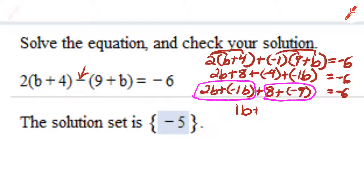Then plus 8 plus negative 9. Again, if you've got $8 in your checking account and you write a check for $9, what are you going to have? You're going to be $1 overdrawn, negative 1. That equals negative 6, because that's what the equation says.